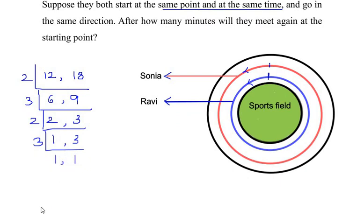Now LCM of these two numbers is nothing but multiplying the numbers we got in these repeated divisions. So we write it as 2 times 3 times 2 times 3, which is going to give us a number 36, or 36 minutes.